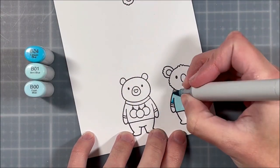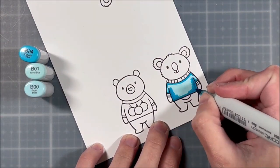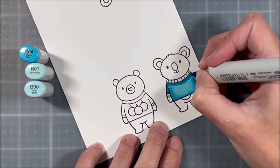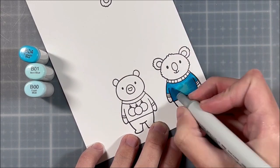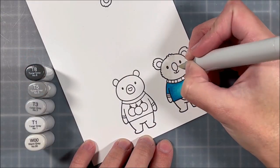Then I'm going to move on and do my Copic coloring. Of course you could use any sort of coloring mediums that you prefer. I stamped on my white heavyweight cardstock which I like to do my Copic coloring on, but you could definitely use colored pencils.